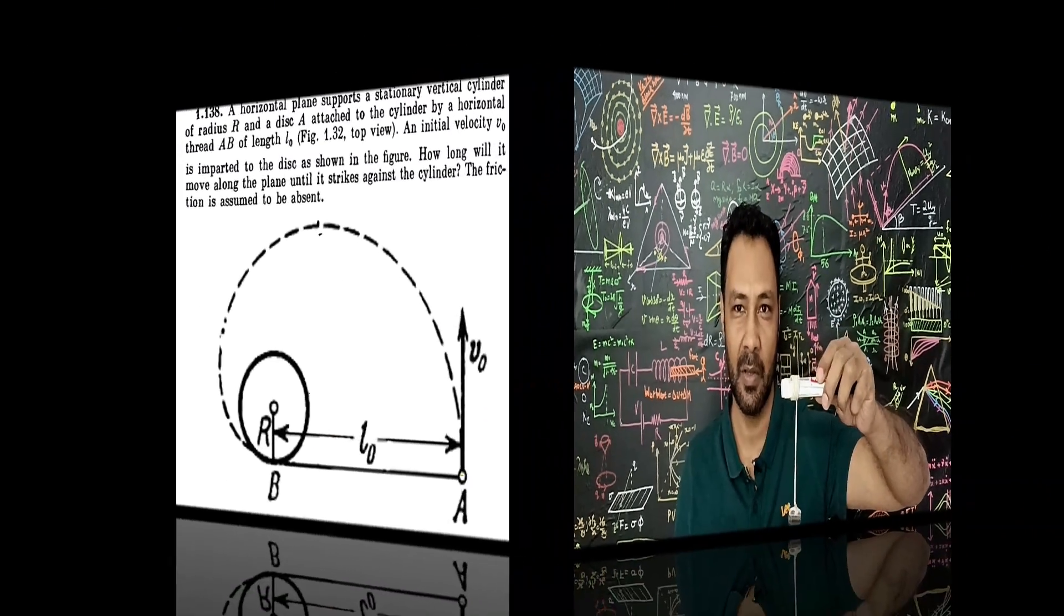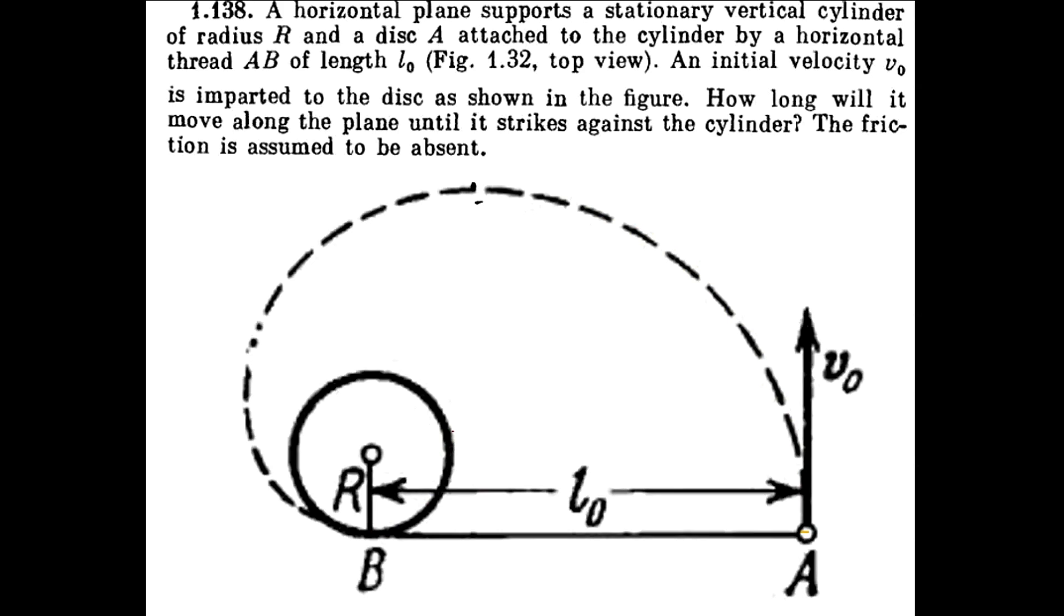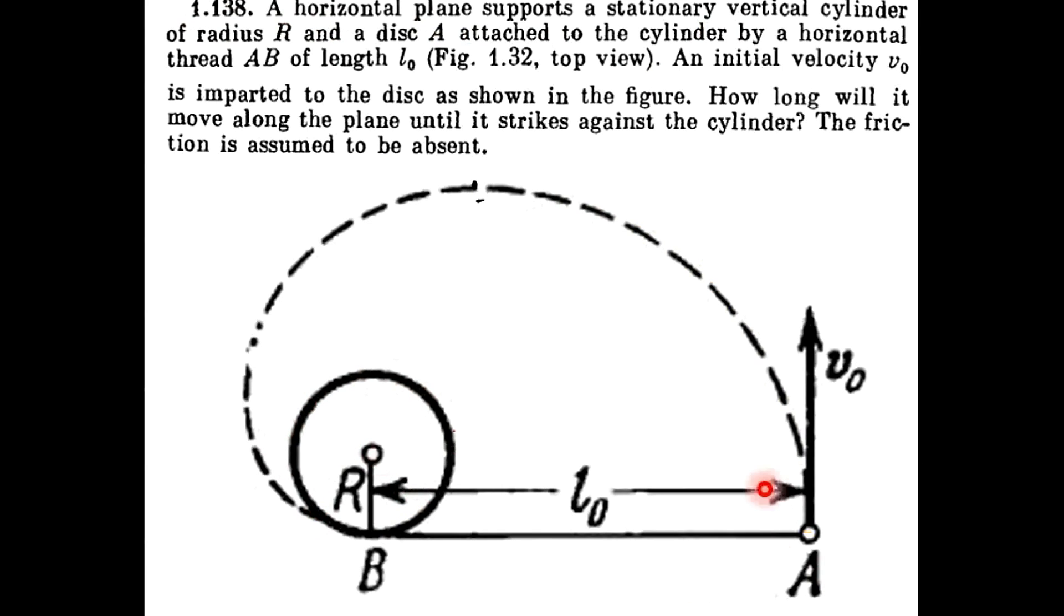So the demonstration is inspired by this question of Irodov 1.138. The question states a horizontal plane supports a stationary vertical cylinder of radius R and a disk A attached to the cylinder by a horizontal thread AB of length L0 and initial velocity V0 is imparted to the disk as shown. How long will it move along the plane until it strikes against the cylinder? The friction is assumed to be absent.